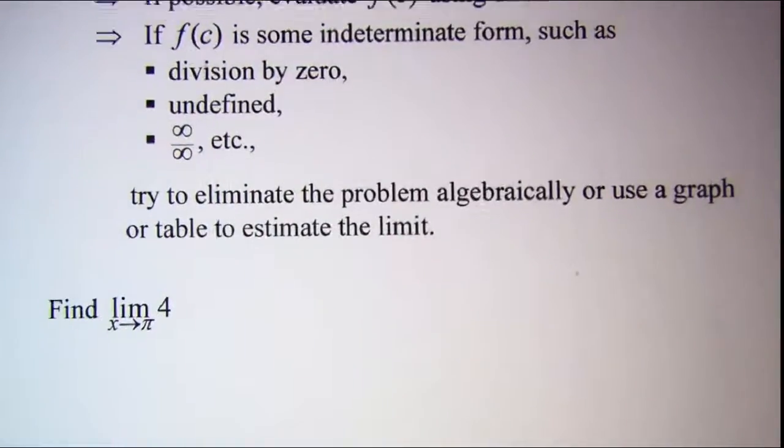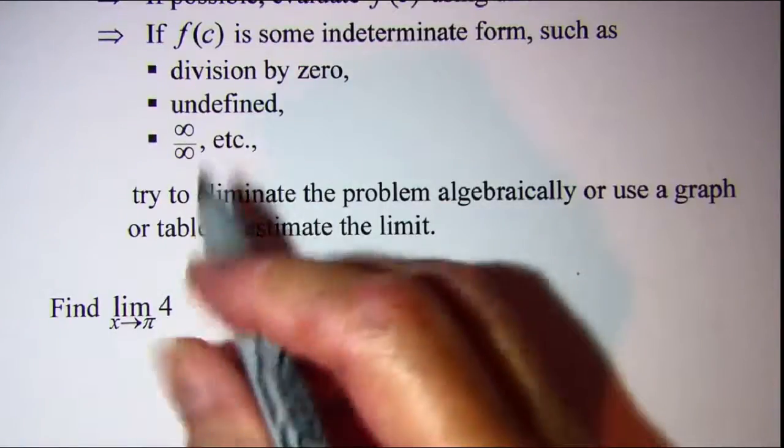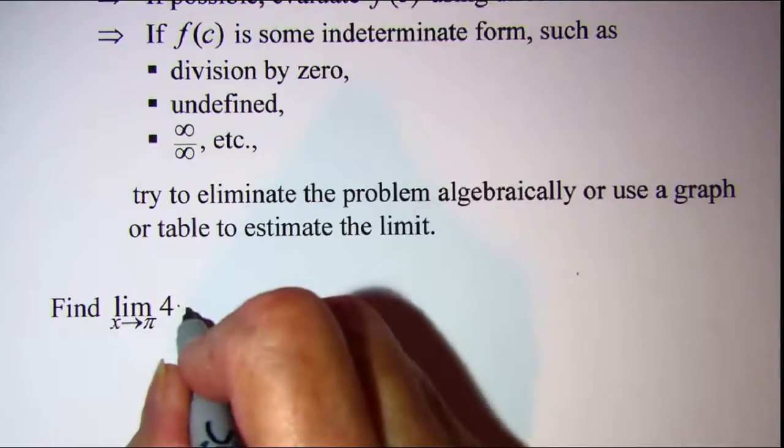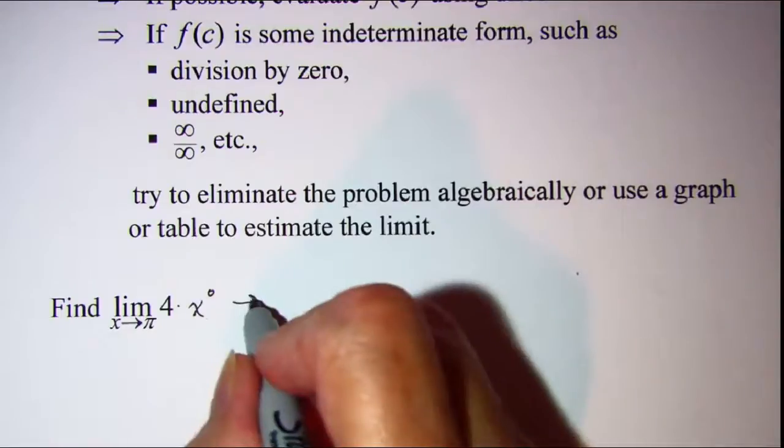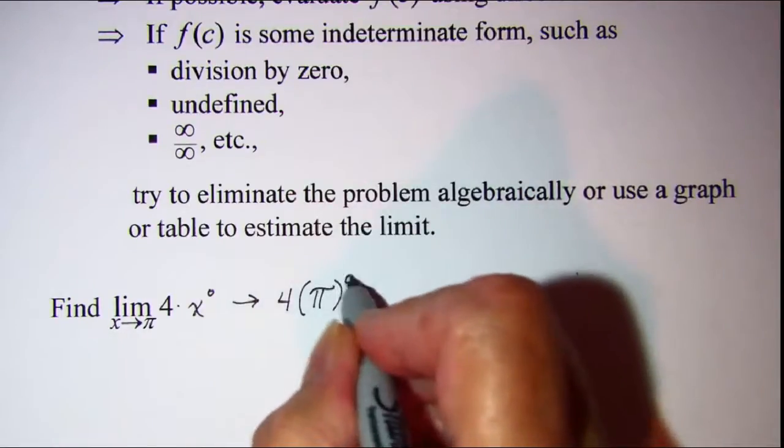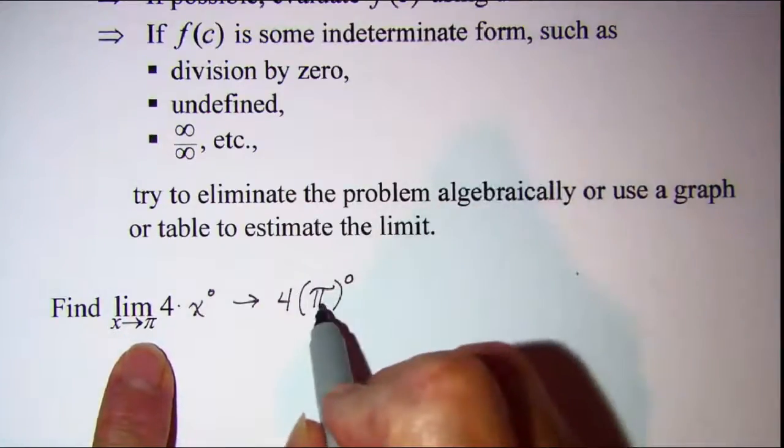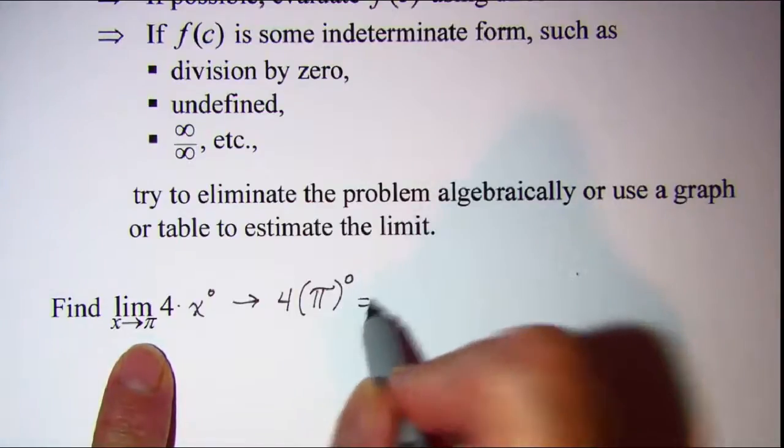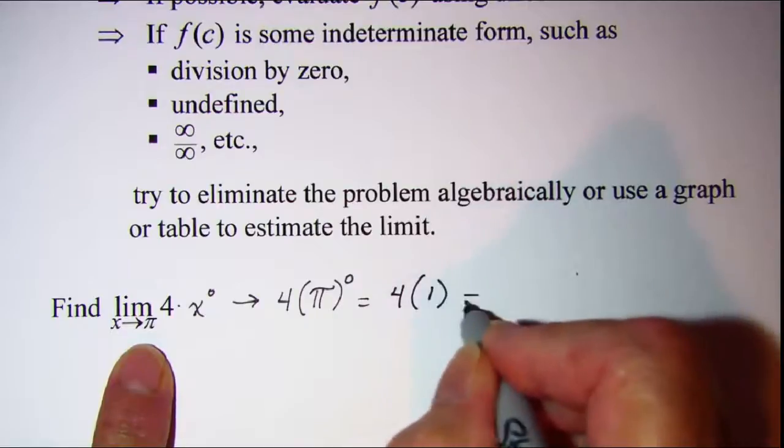Another example. Again let's force x to make an appearance, so multiply this by x to the zero power. So this would be 4 times pi to the zero power, since x is approaching pi. Now anything to the zero power is 1, so this is equal to 4 times 1, which is 4.